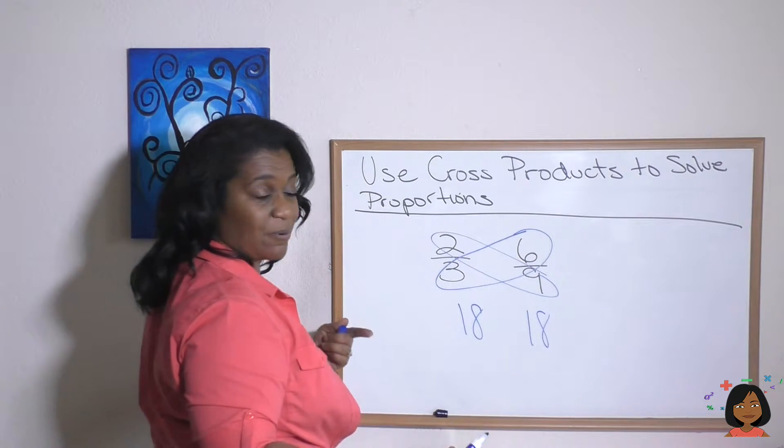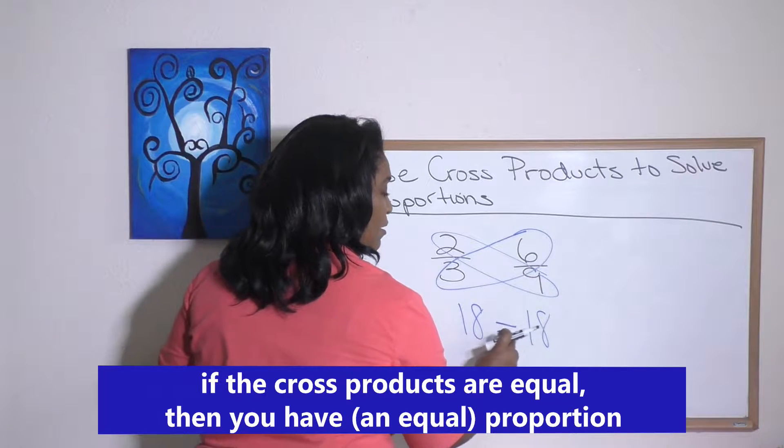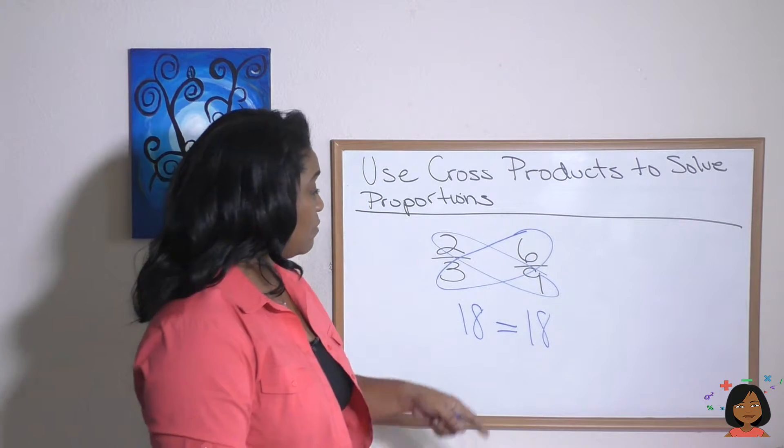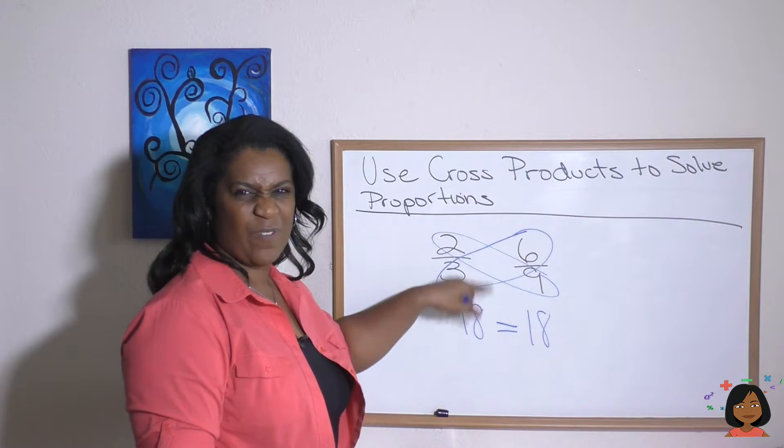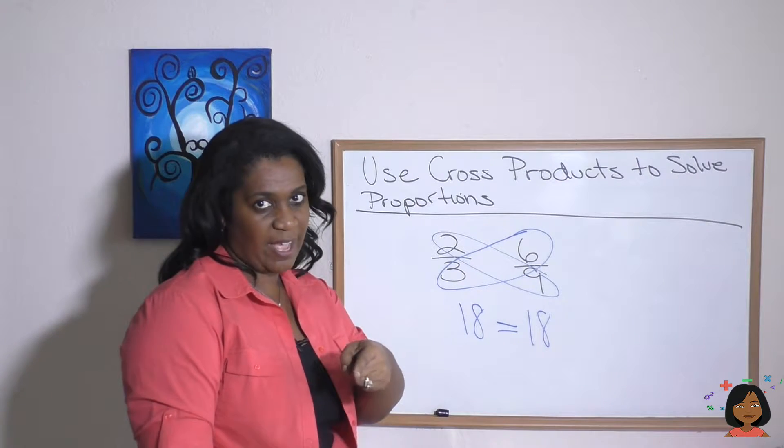If the two numbers match, if the cross products match, then your proportion is equal. Now, why is this useful? In some problems, we're not going to have that nice equivalent to multiply by. So cross products can be very helpful.